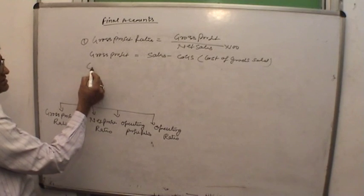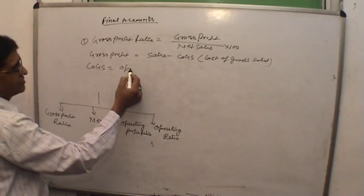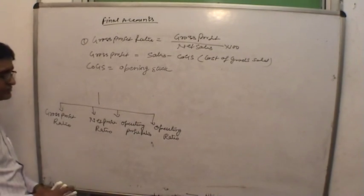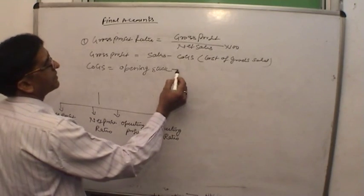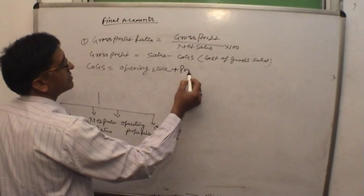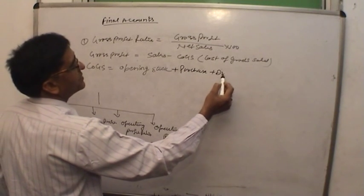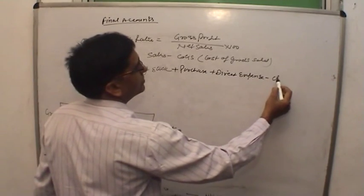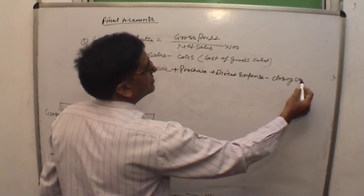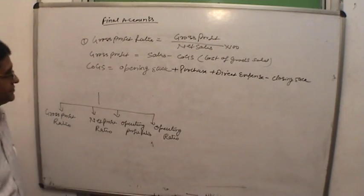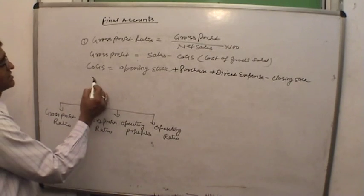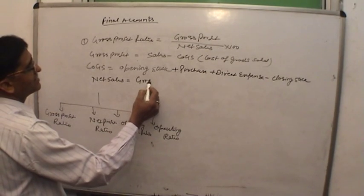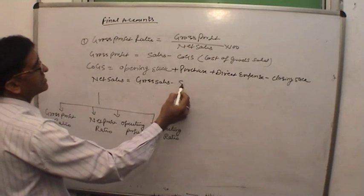COGS equals opening stock plus purchases plus direct expenses minus closing stock. Net sales equals gross sales minus sales returns.